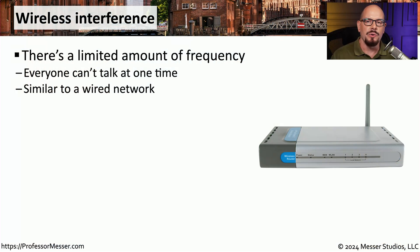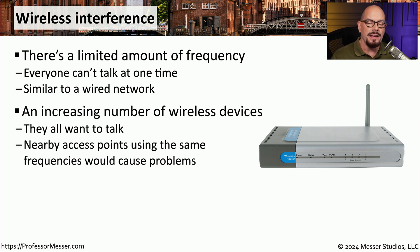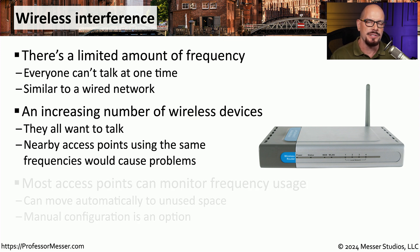On a wireless network, there are only so many frequencies available to be used by your access point and your clients. You have to make sure that only one device is communicating at a time. Not only do we have a lot of devices on the same wireless network, we may have multiple wireless networks within the same general area, and because of that we have to be very careful about creating interference between these access points.